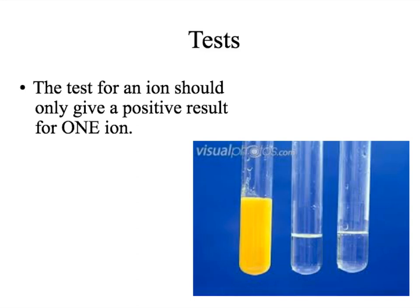This means that we can gradually rule out different compounds. For example, in the first set of tests, we might find out that copper 2 ions are present, and in the results of the second test, we could find out that we have chloride ions. Therefore, assuming that the substance is pure, we will have copper 2 chloride. For your exam, you need to know some common tests for both positive and negative ions.